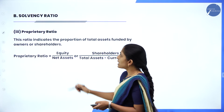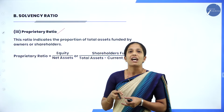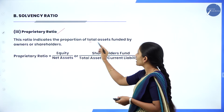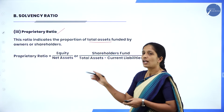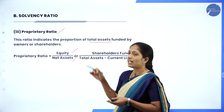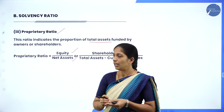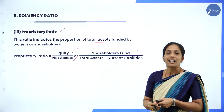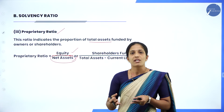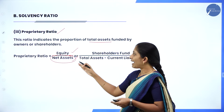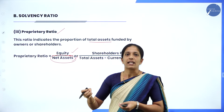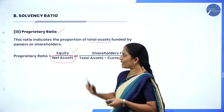The third type of solvency ratio is proprietary ratio, where you compare shareholders funds with capital employed. This ratio indicates the proportion of total assets funded by the owners or shareholders. The formula is: Proprietary ratio = Shareholders fund divided by net assets, or shareholders fund divided by (total assets minus current liabilities).